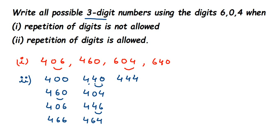Similarly, we do the same for 6. Starting with 6: we have 6-0-0. Introducing 4 gives 6-4-0, interchange to get 6-0-4. Repeating all digits as 6 gives 6-6-6.